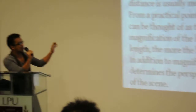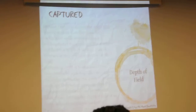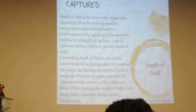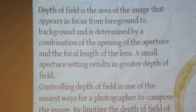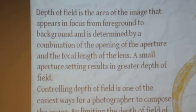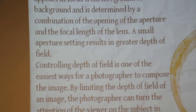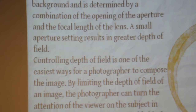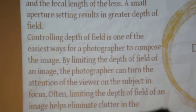We enlarge it, so that's when we magnify. Depth of field — one of my favorite concepts. Depth of field is the area of the image that appears in focus from foreground to background, and is determined by a combination of the opening of the aperture and the focal length of the lens.